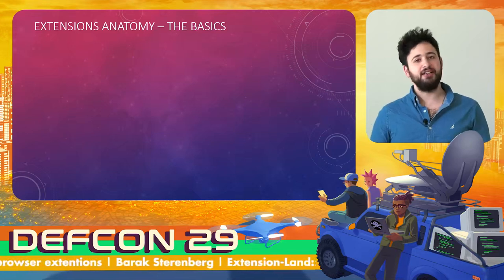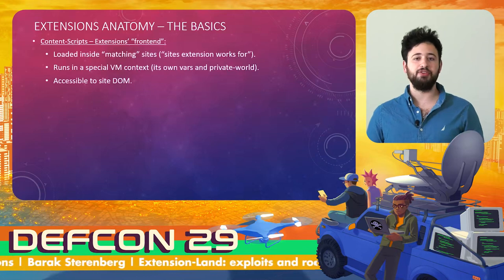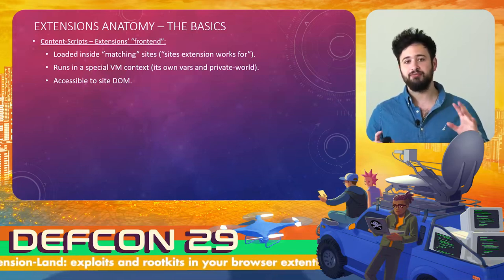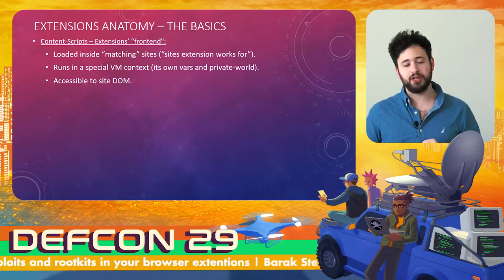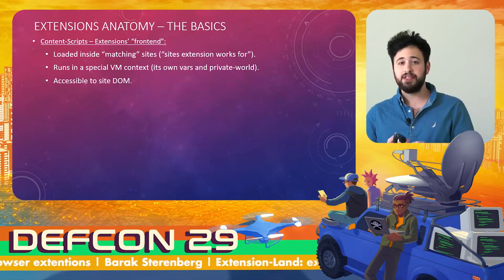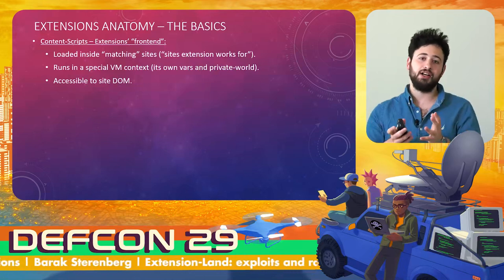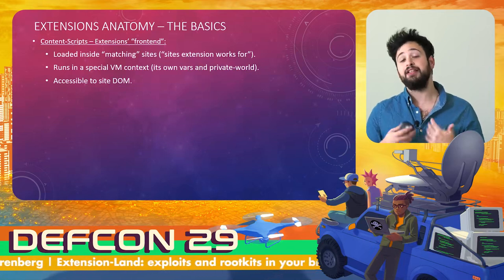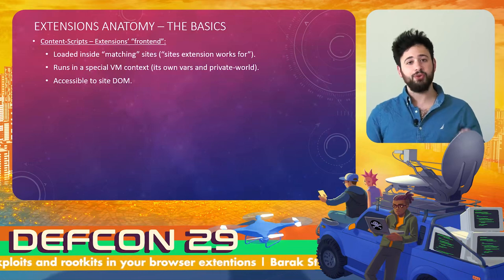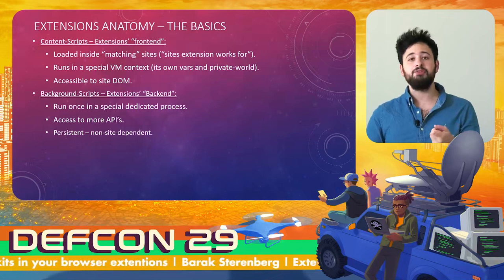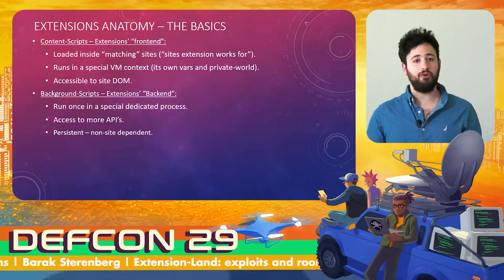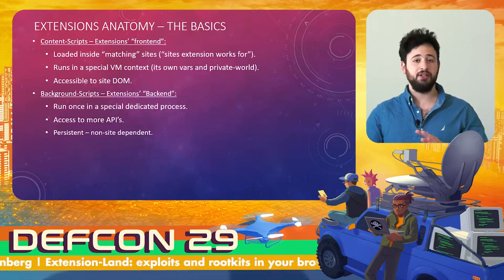When I tackled the extension world, I observed multiple layers inside extensions themselves. Extensions include a few high-level components. The first is the content script — the extension's front end. It's a specific compound of JavaScript and HTML code that can be loaded in matching sites. For example, if you're an ad blocker, the content scripts load for every site you visit. Compared to background scripts, content scripts are only loaded inside specific sites, are not persistent, and disappear when you close the tab.